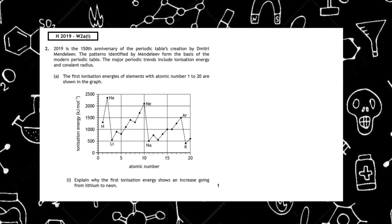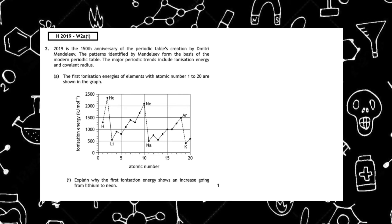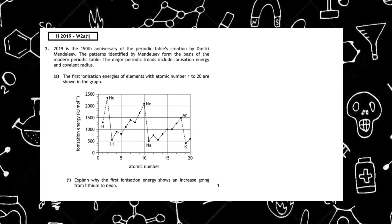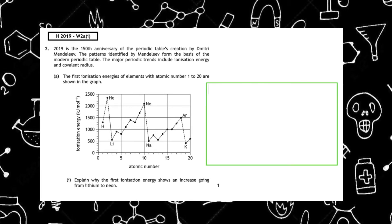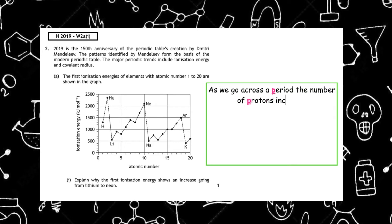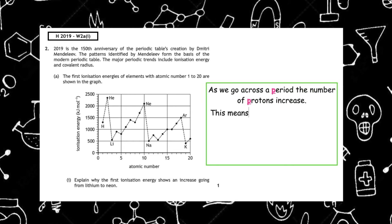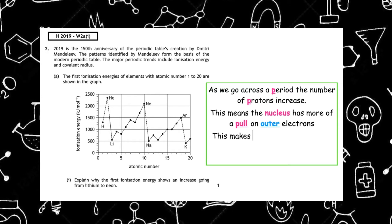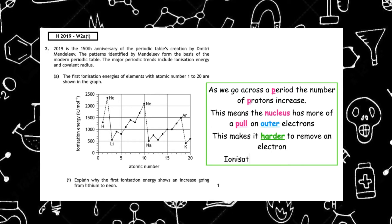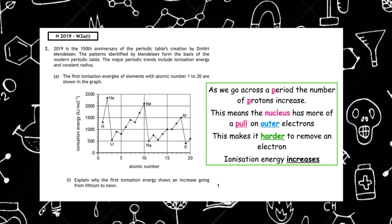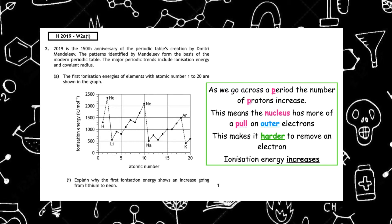This past paper question is from the Higher 2019 written 2A part 1: explain why the first ionization energy shows an increase going from lithium to neon. As we go across a period, the number of protons increase. This means that the nucleus has more of a pull on the outer electrons. Therefore, the energy required to remove this electron is going to be much greater, and hence why the ionization energy increases.